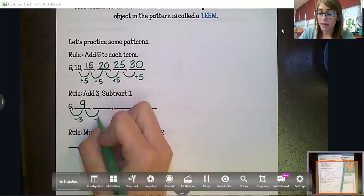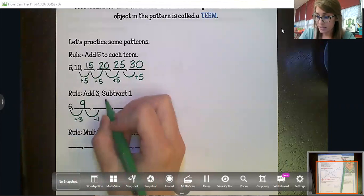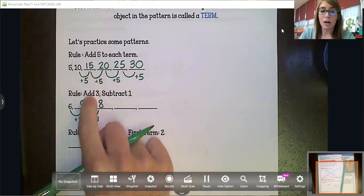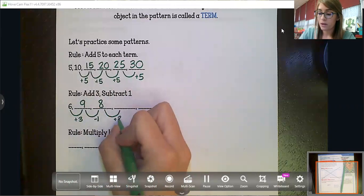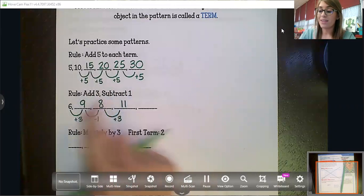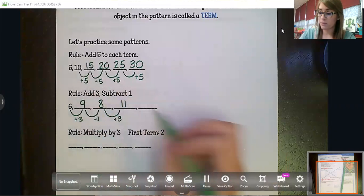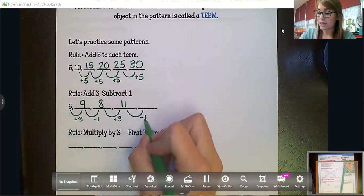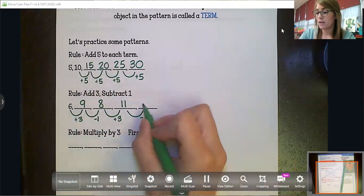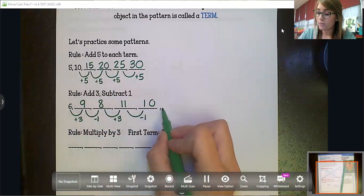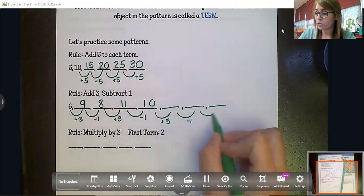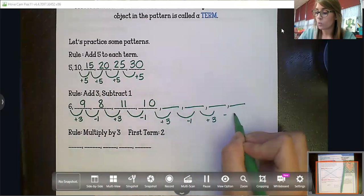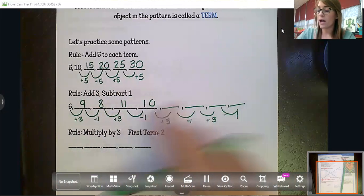Nine minus one is eight. And then we're going to subtract the one from this eleven. Eleven minus one is ten. And so if we were to keep going, the pattern would continue just like that. You would add three, subtract one. Add three, subtract one, all the way until the end.